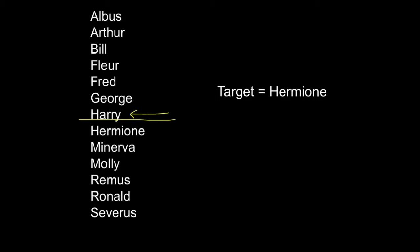So now we've got six items in our list. We once again identify the middle one. Now here we've got an even number of items in the list. So the middle position would usually be in between Molly and Remus, but we take the second of those two values. So we're actually going to take Remus as our middle value. Does Hermione come before or after Remus? Well of course it comes before, so we're going to take everything in between Remus and Harry now as our list.